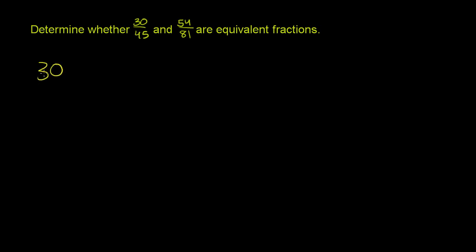So 30 over 45. What's the largest factor of both 30 and 45? The one I can see, 15 will go into 30. It'll also go into 45.